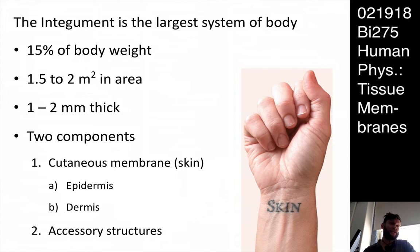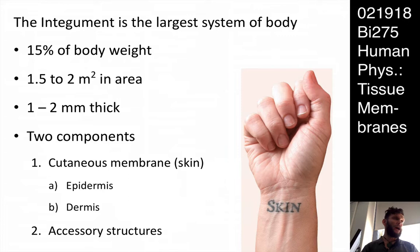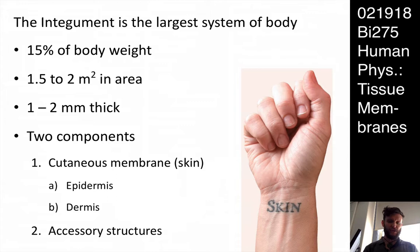The integument is about 15% of the mass of your body — that's a significant amount of who you are. It is about two square meters in area, and despite that, it's only a couple of millimeters thick — that's incredibly thin, about the thickness of your thumbnail maybe. It's made of the cutaneous membrane, which has the epidermis on top of the dermis. And then there are various accessory structures that make up the skin, such as sebaceous glands, hair, and sweat glands.